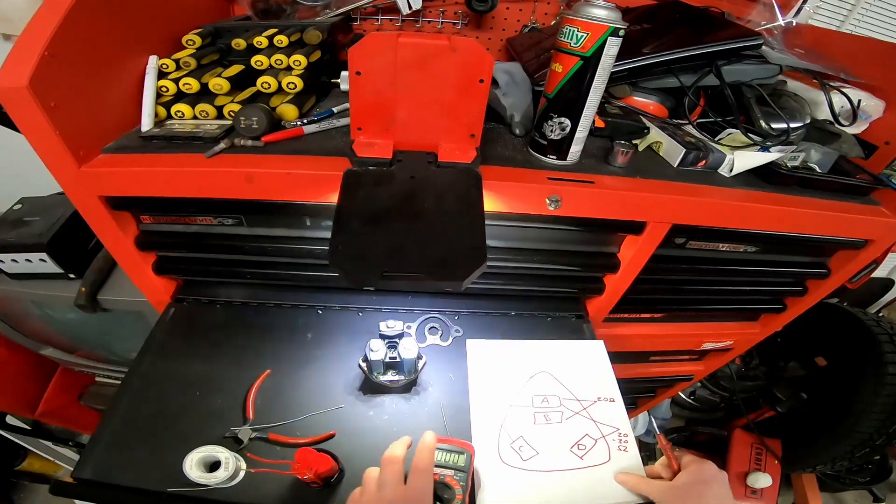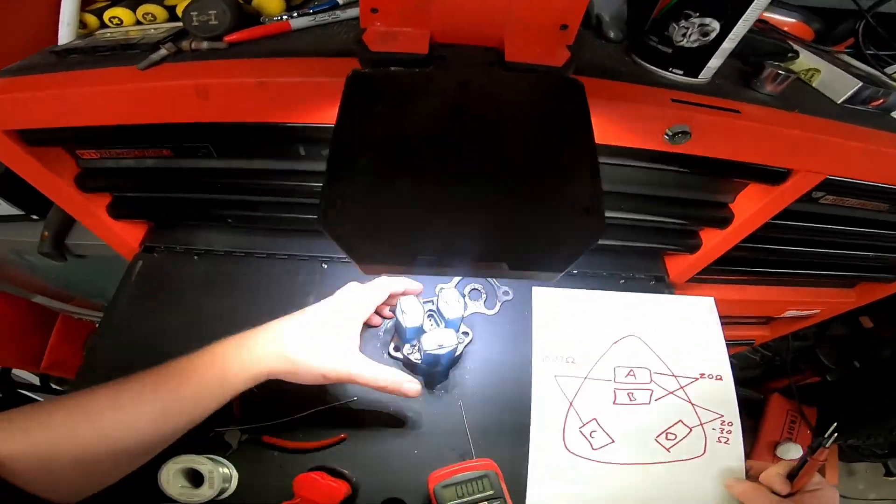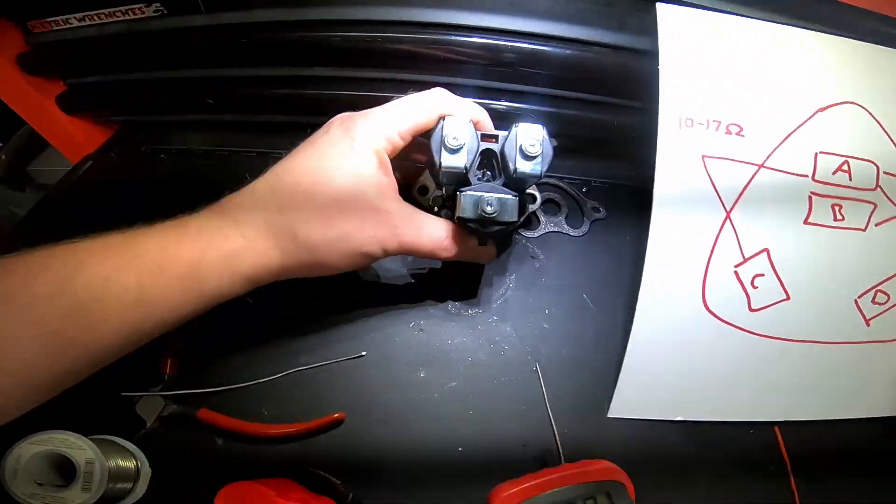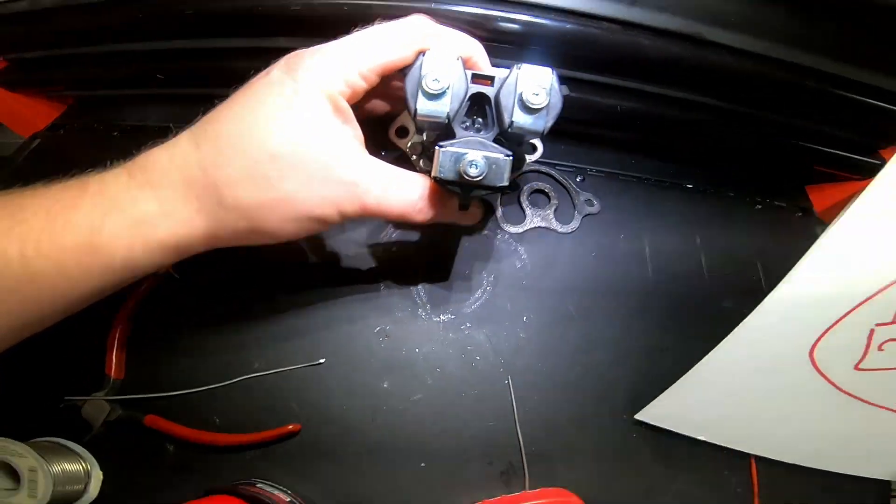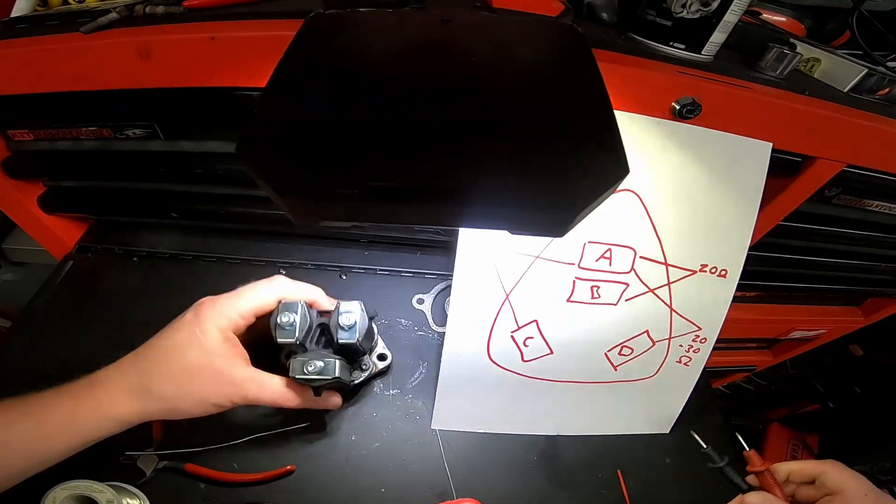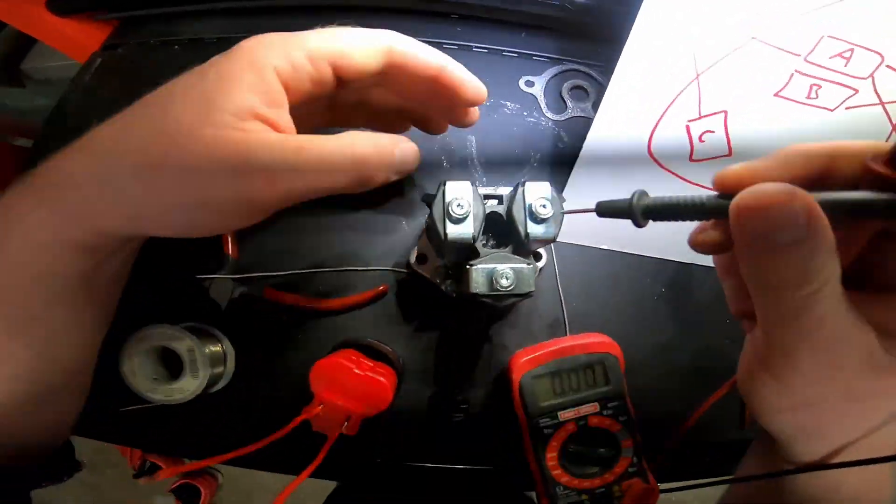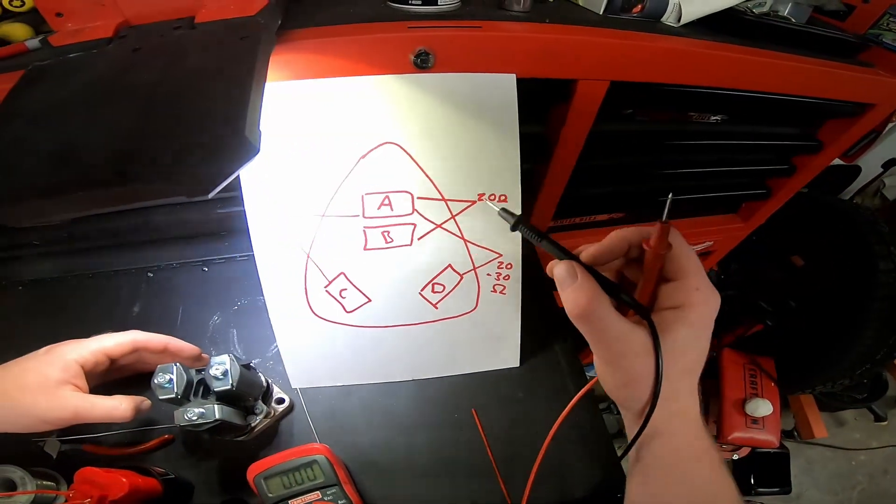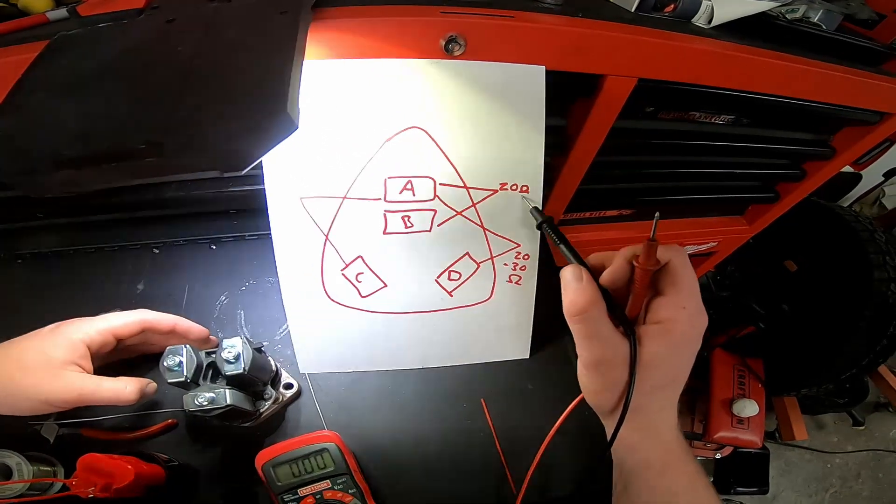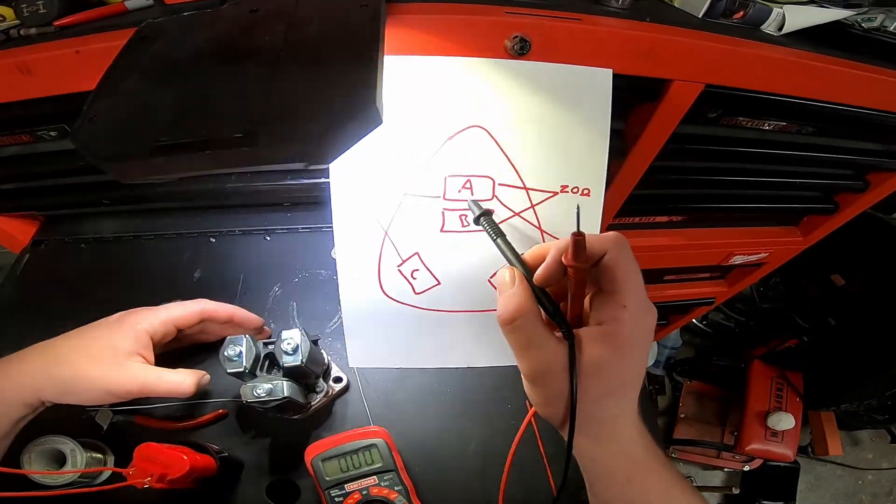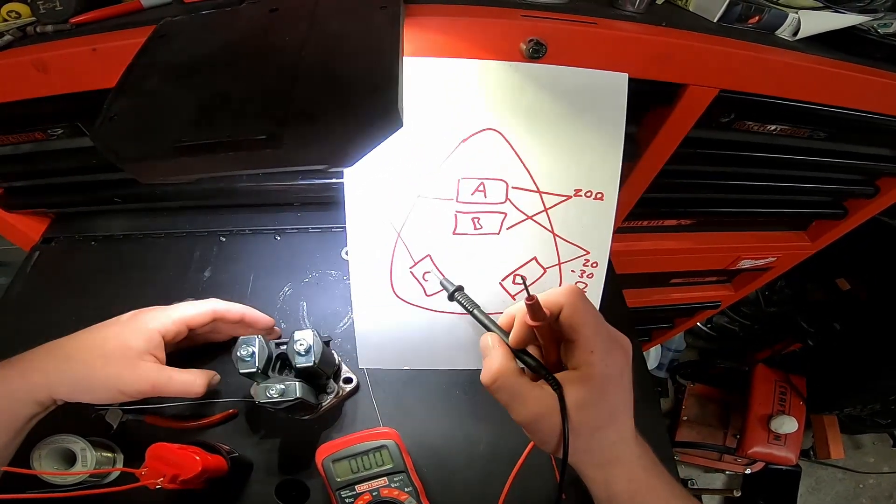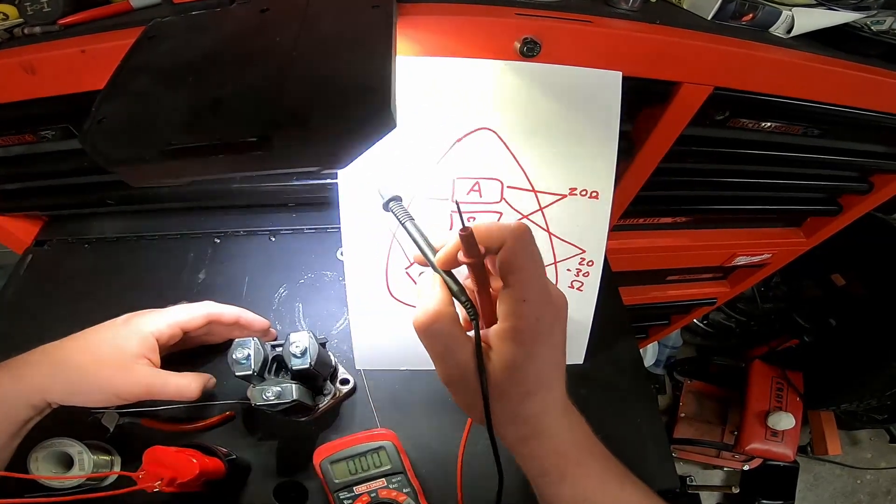The next test you want to do, the connector you can see in there looks kind of like this. We're going to ohm it out and we're going to go from the A terminal to the B terminal. We should have 20 ohms. We're going to go from the A terminal to the C terminal and then we should have 10 to 17 ohms.